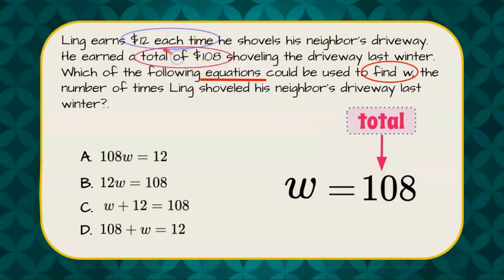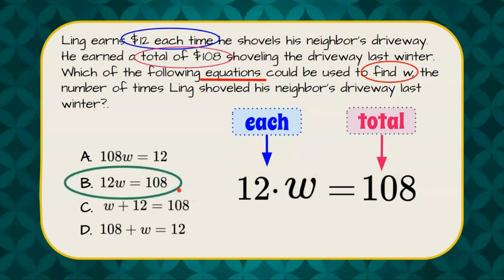And our other keyword was $12 each time. So what am I doing to the W? It's $12 each. So each means to multiply. 12 times the number of times he shovels equals $108. And there is our answer choice B.